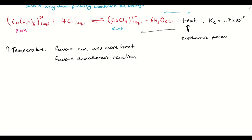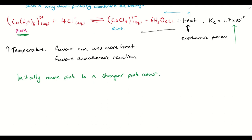What would happen in terms of colour change? We would see that the system would go from initially being more pink to a stronger pink colour, because we're favouring the reverse reaction and the formation of these pink ions. So increasing temperature favours the endothermic reaction, and decreasing temperature would favour the exothermic reaction. We can tell if a reaction is endothermic or exothermic depending on whether heat is written as a product or a reactant, or alternatively by looking at the delta H value for that process.